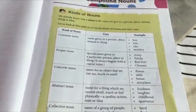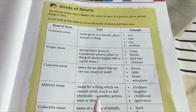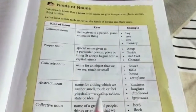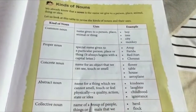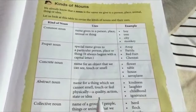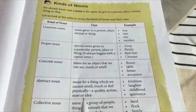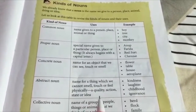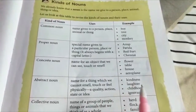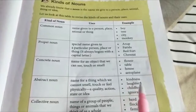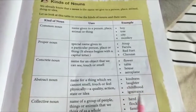Abstract noun. An abstract noun is the name for a thing which we cannot smell, touch or feel physically — a quality, action, state or idea. For example: laughter, kindness, childhood, ignorance.